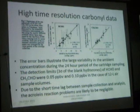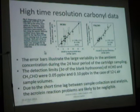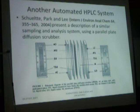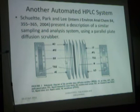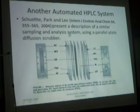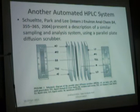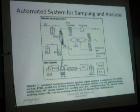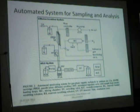The approach seems to work. The collection efficiency is something that this particular work hasn't explored quite as well as it needs to be. There are a variety of different groups that have worked on various scrubbing techniques. This one uses a parallel plate diffusion scrubber to collect carbonyl compounds into the DNPH solution for derivatization — just a different way of doing the collection, the same idea, pulling the derivatizing agent through one part of the system and the carbonyl compounds through the other.